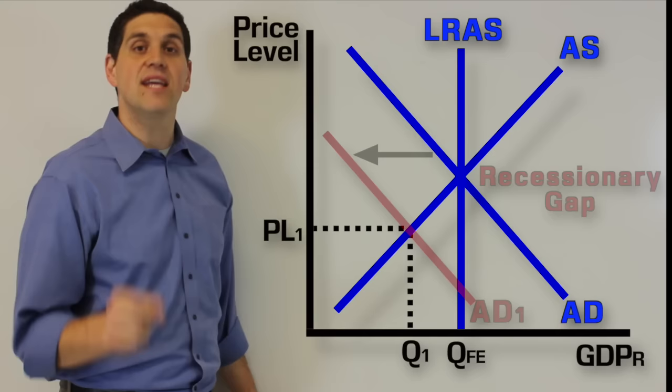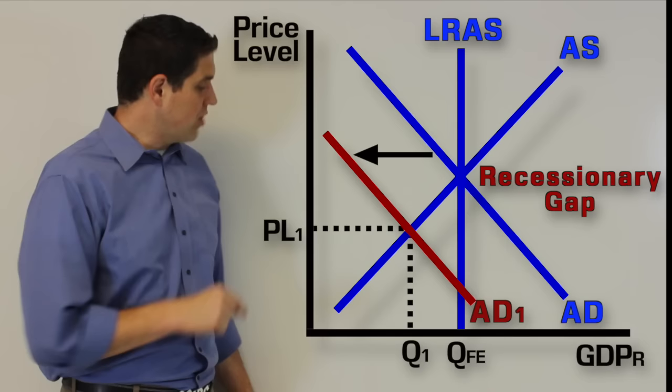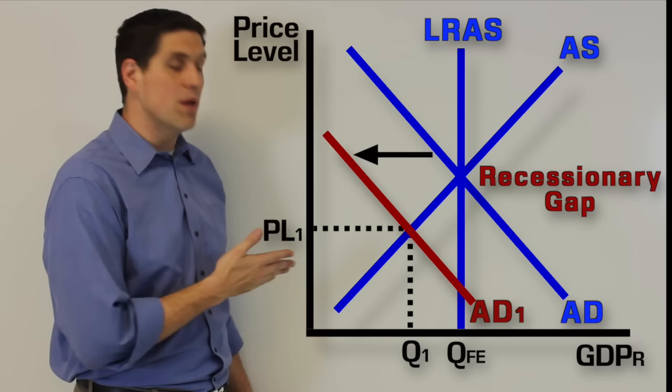If there's a decrease in aggregate demand, that would mean we're now in a recessionary gap. That means our output, where we currently are, our actual GDP, is less than our potential GDP or our full employment GDP. That amount is called a recessionary gap.